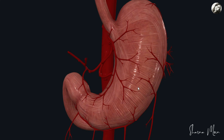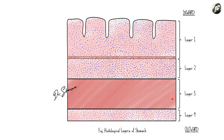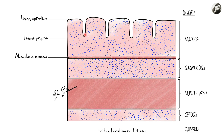To understand the mode of arterial supply you also need to know about the layers of the stomach. Histologically, the stomach has four layers from outward to inward: the serosa, the muscle layer, the submucosa, and finally the mucosa — the innermost layer. The mucosa is again subdivided into three layers: on the top we have the lining epithelium, then we have the lamina propria of the mucosa, and then the muscularis mucosa. So these three layers together form the mucosa.